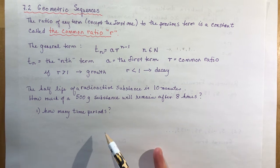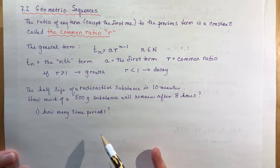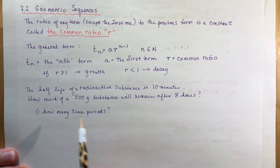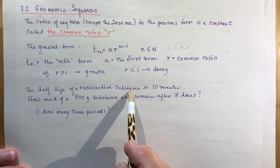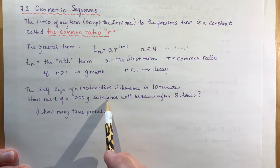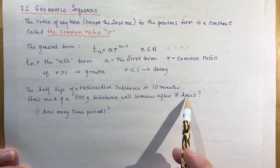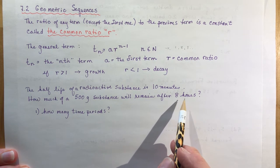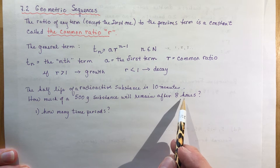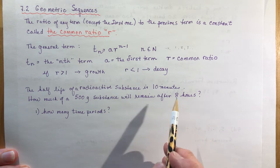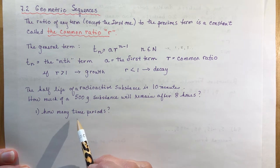There is also a recursive formula for a geometric sequence. First example: the half-life of a radioactive substance is 10 minutes — how much of a 500-gram substance will remain after 8 hours? You've probably seen this before in exponential functions, but because it's part of a sequence it will be treated slightly differently.